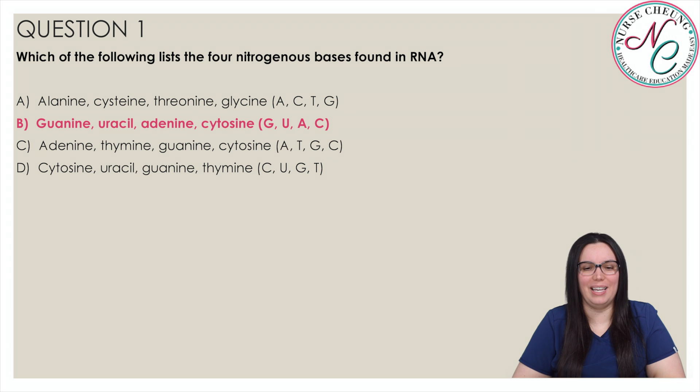The correct answer is B: guanine, uracil, adenine and cysteine. When RNA transcribes a codon from DNA during transcription, thymine is replaced with uracil. Thymine is less prone to mutation which makes it a good storage vehicle for DNA. Uracil is more flexible which makes it more suitable for its temporary role in RNA.